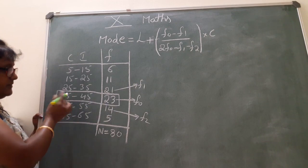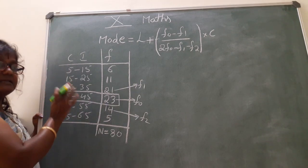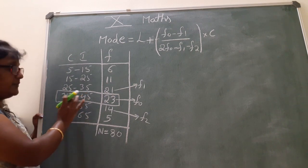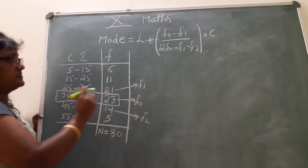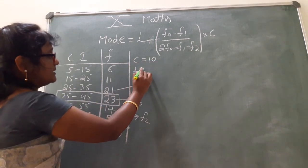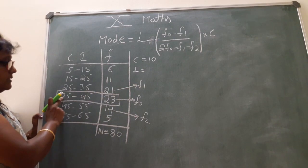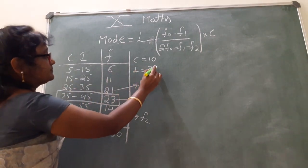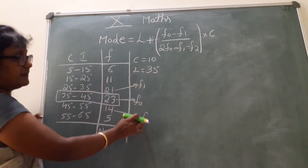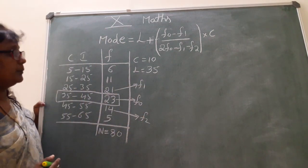See the corresponding class interval for the highest frequency. This is the lower limit — 35 is the lower limit, so L equals 35. C is the width of the class interval: 35 to 45 gives a class width of 10, so C equals 10. We now have C value, L value, F0, F1, and F2. Just substitute in the formula and find the mode.